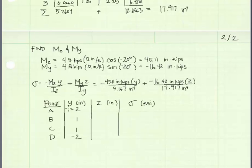Let's first look at the y values for points A, B, C, and D. For A and D, they're negative 2. For B and C, they're positive 1. If we look at the cross section,